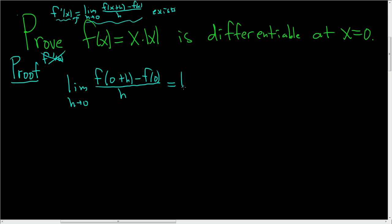This is equal to the limit as h approaches 0. Let's write it down one more time: f(0+h) is f(h), and we still have f(0)—I didn't simplify that on purpose—over h.